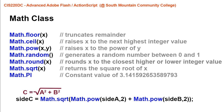x is the value being raised and y is the exponent. The random method generates a number between 0 and 1 — it would be a decimal number. The round method rounds x to the closest higher or lower integer value. sqrt performs the square root of x.